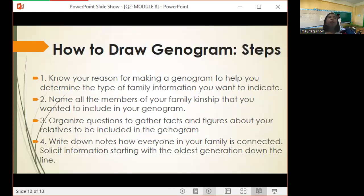We have different ways in making a genogram. Number one, know your reasons for making a genogram to help you determine the type of family information you want to indicate. Number two, name all the members of your family kinship that you wanted to include in your genogram. Number three, organize questions to gather facts and figures about your relatives to be included in the genogram. And number four, write down notes how everyone in your family is connected. Solicit information starting with the oldest generation down the line.